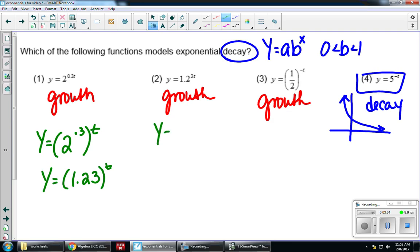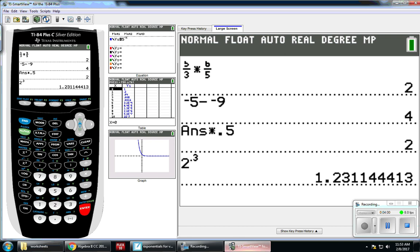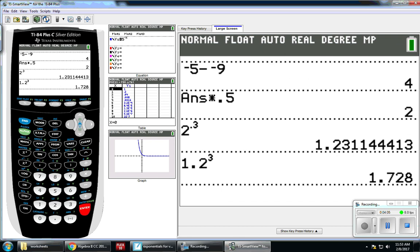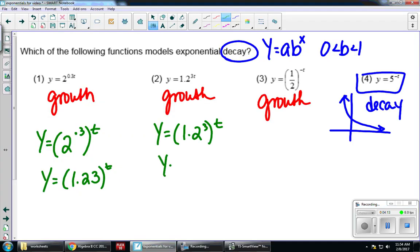Let's do the same thing with number 2. 1.2 to the third with the t on the outside. Back to my calculator, 1.2 to the third, and I get 1.728. Rounding to the nearest hundredth just to keep it consistent, I have 1.73. So once again this is growth, not just because of our graph that we saw earlier but because of our growth factor being larger than 1.